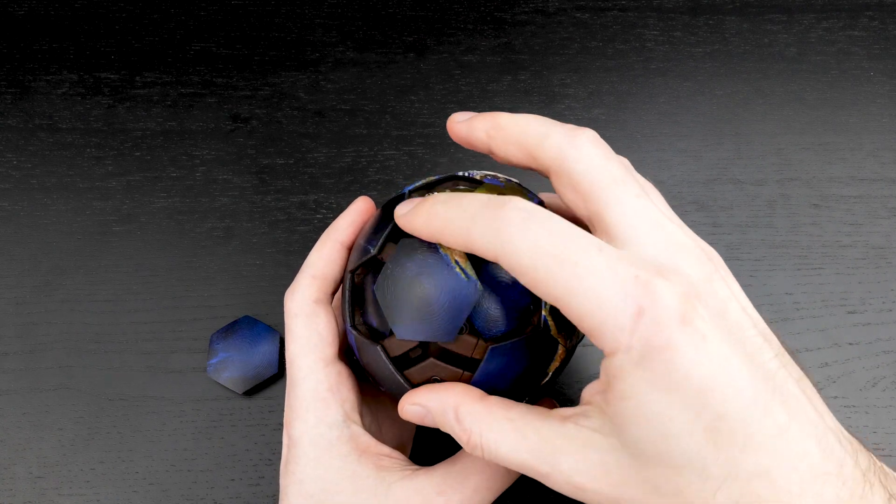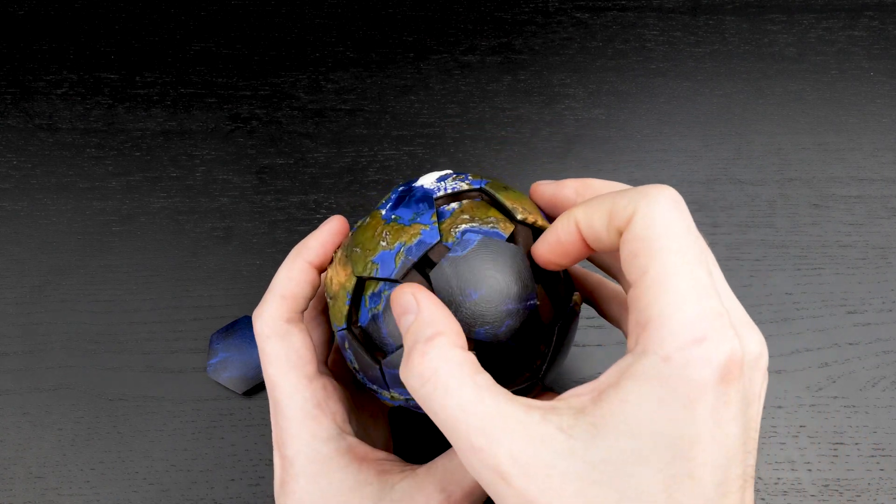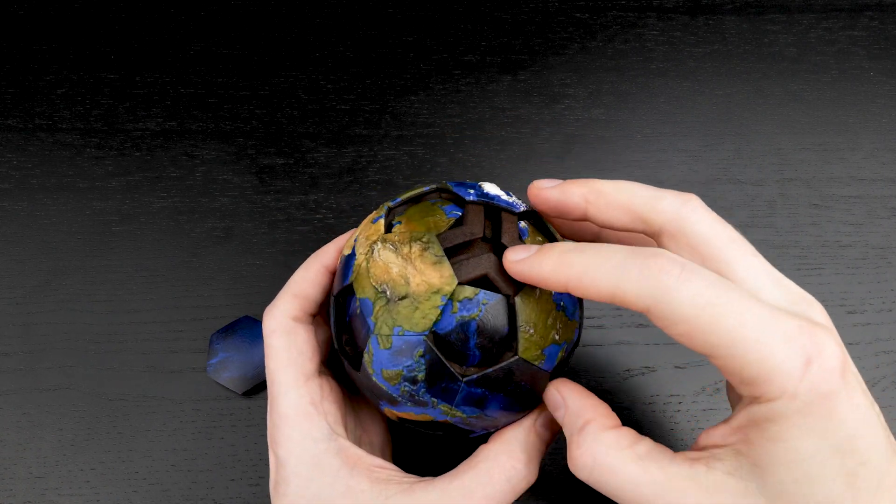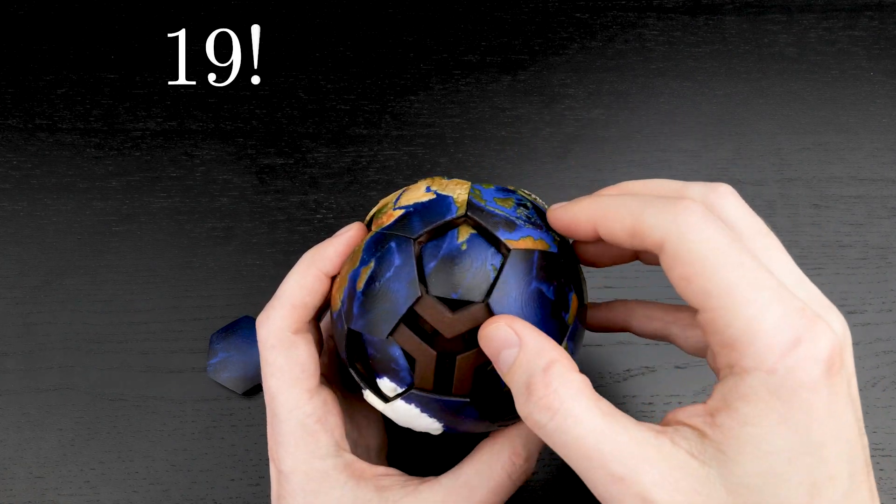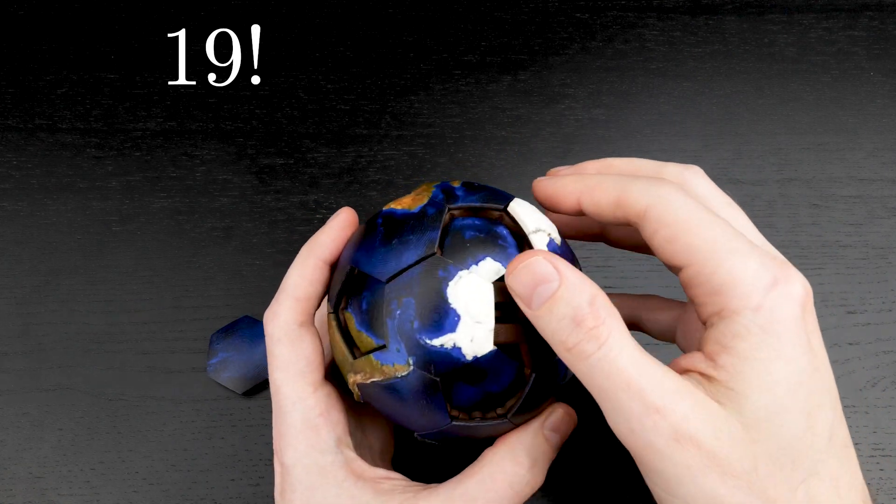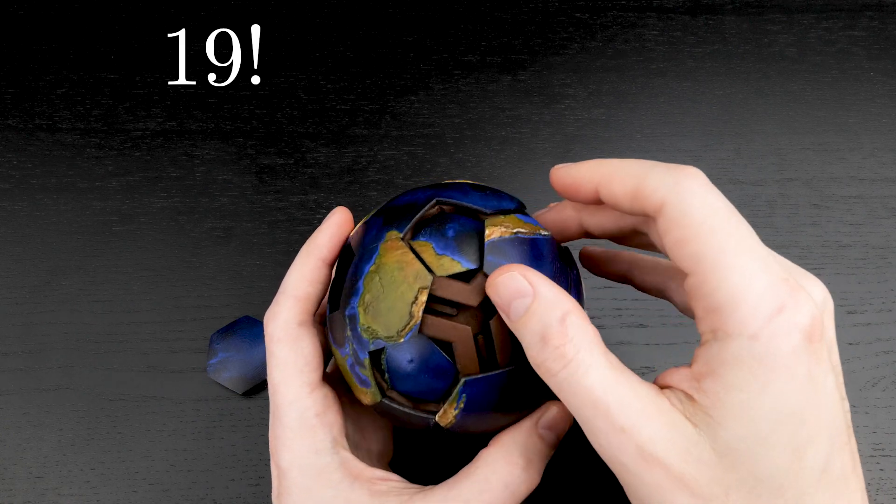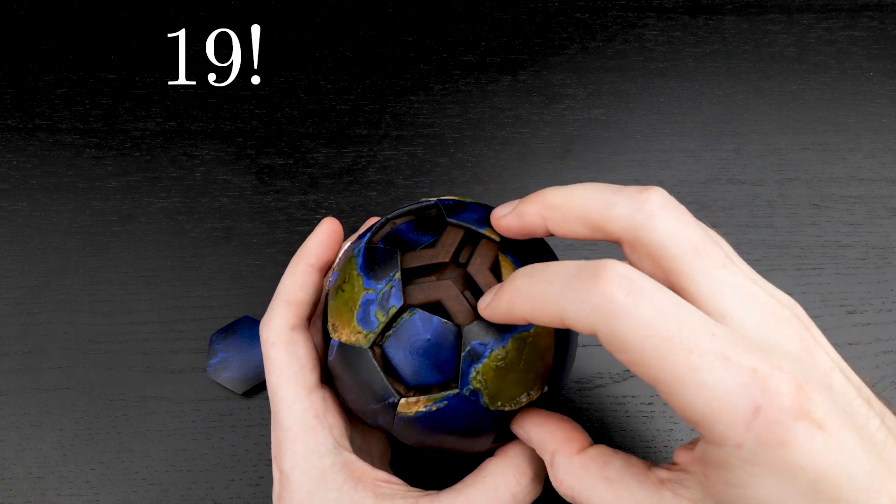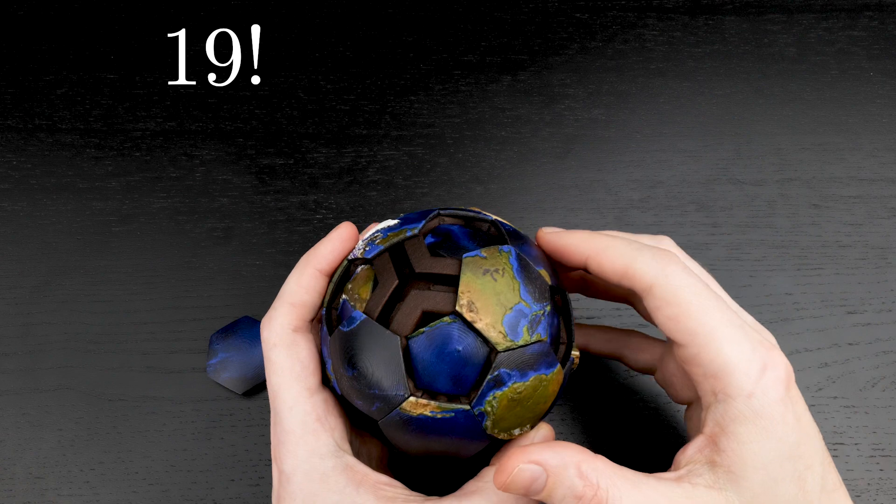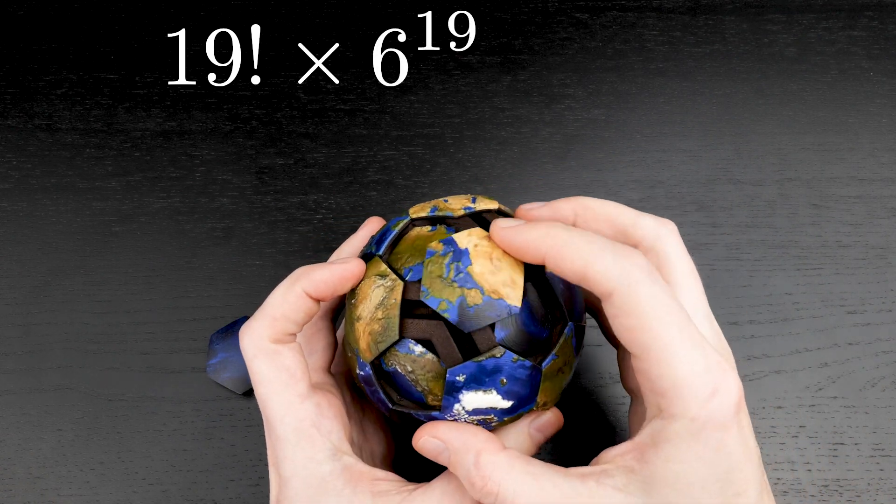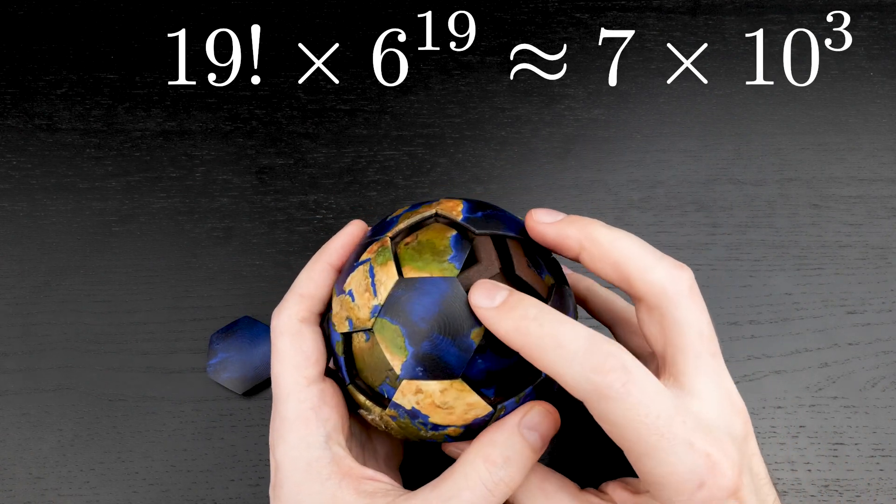As a rough estimate of how complicated the puzzle is, we can try to count the number of possible states. Assuming that we always get the empty space back to that spot in the South Pacific, there are 19 factorial possible ways to arrange the 19 tiles, and each tile has six possible orientations. So there are at most 19 factorial times 6 to the power 19 states, which is around 7 times 10 to the power 31.